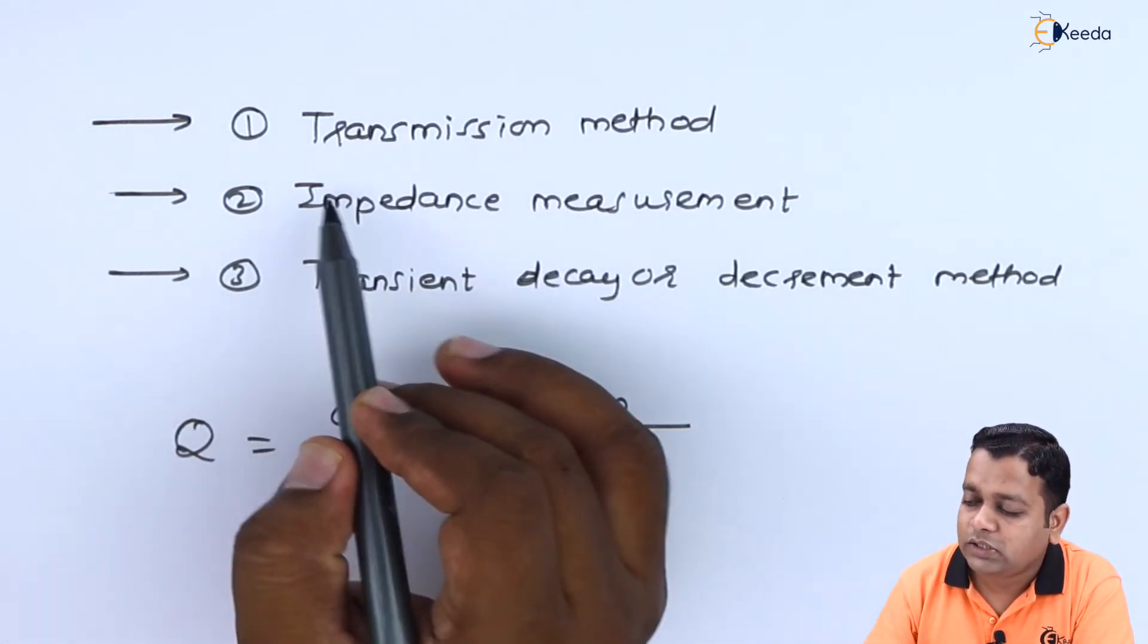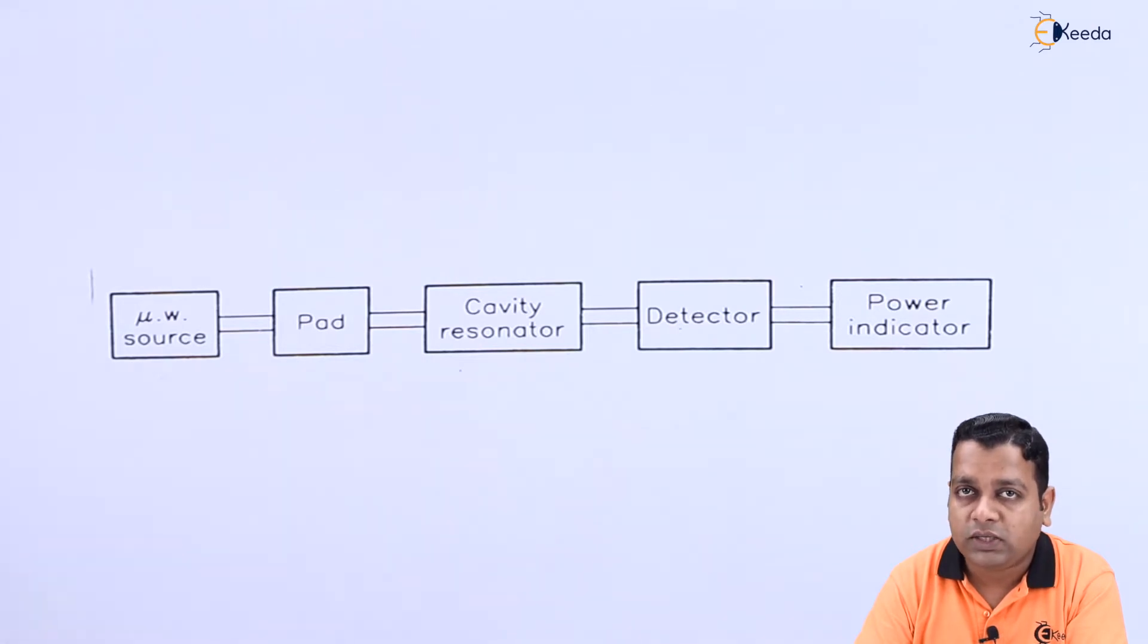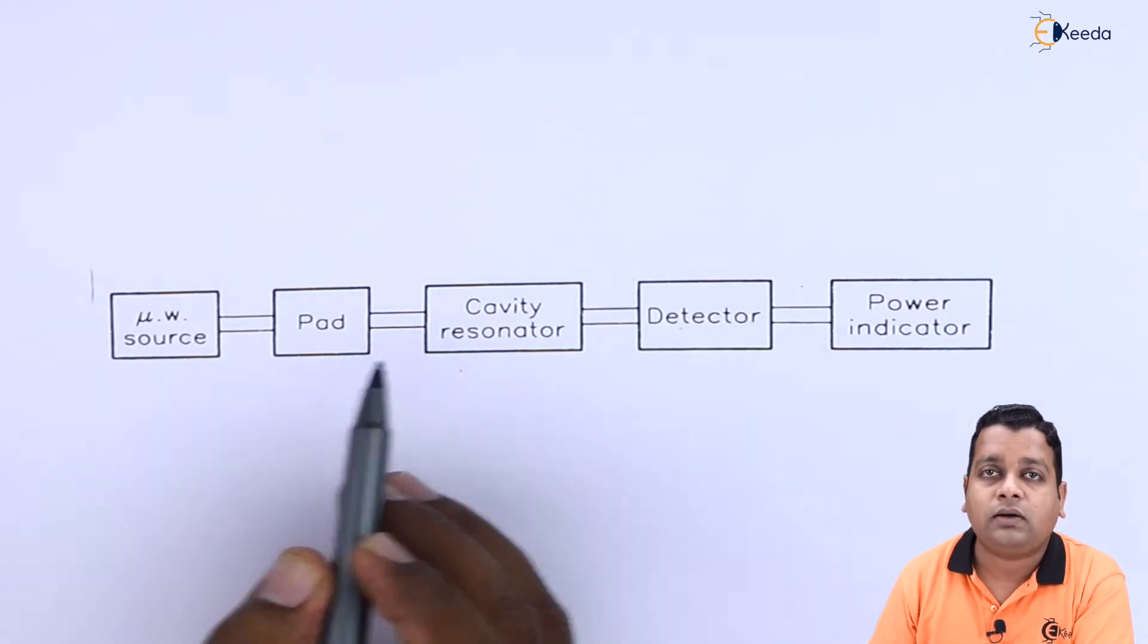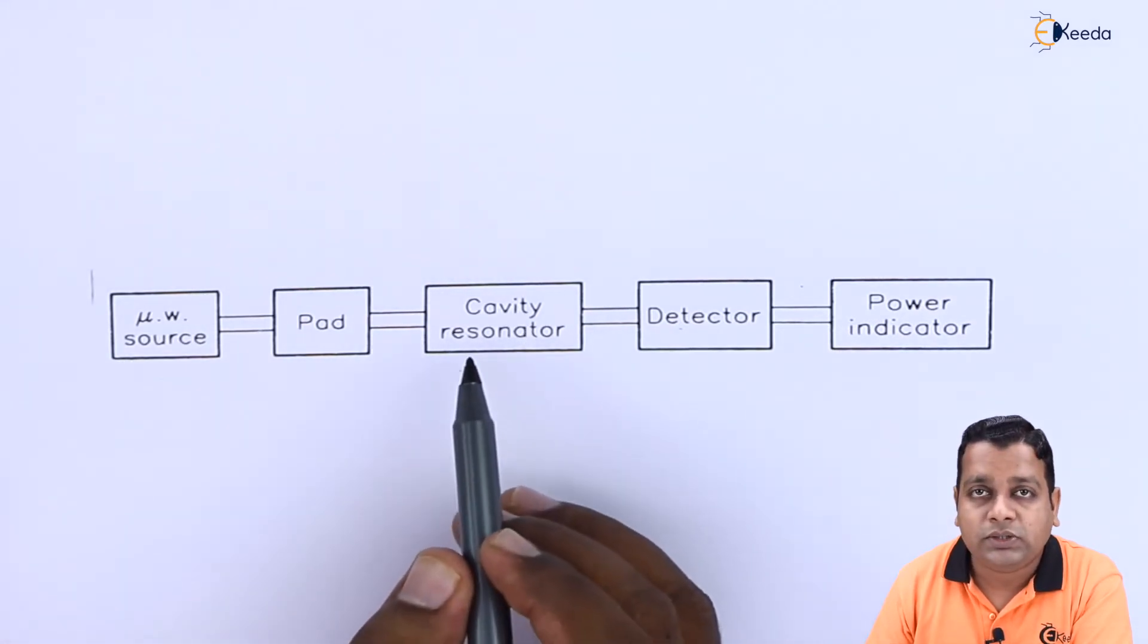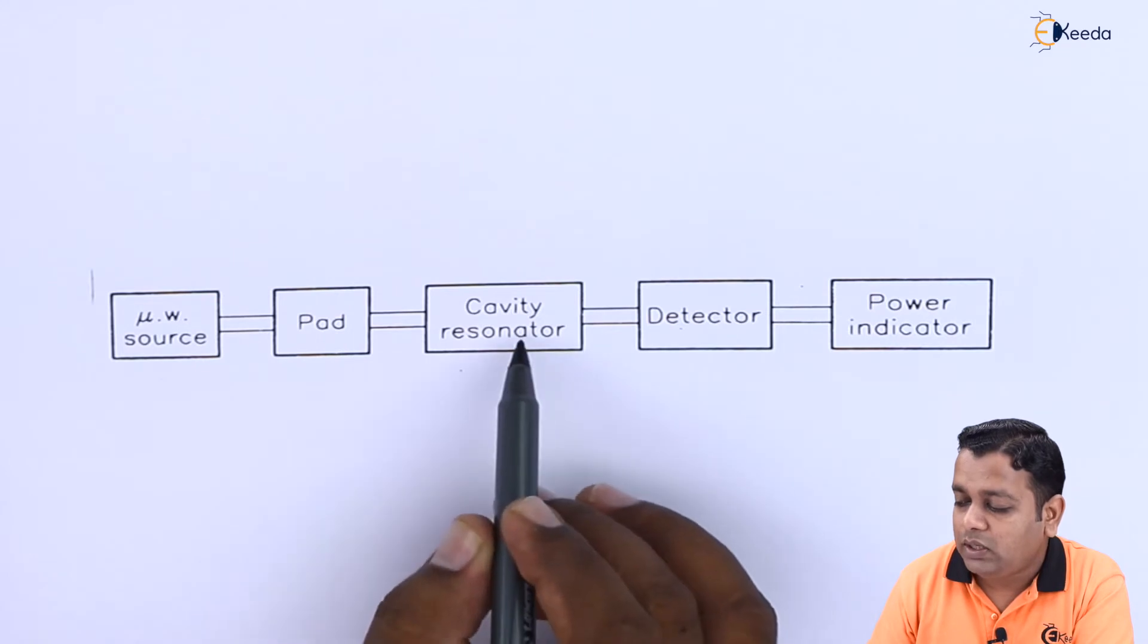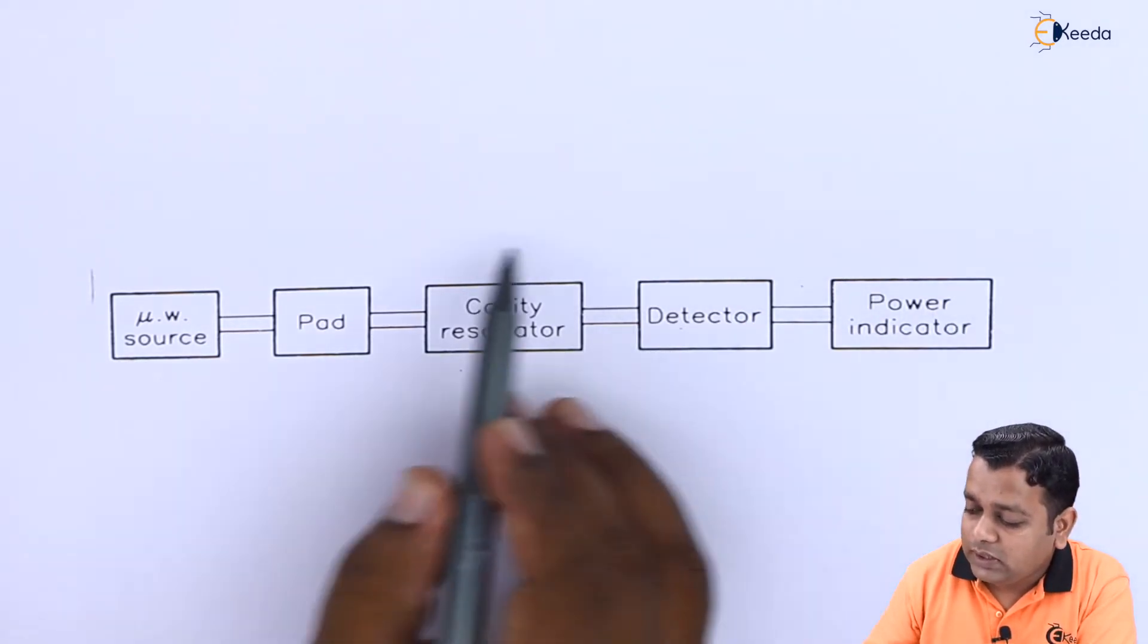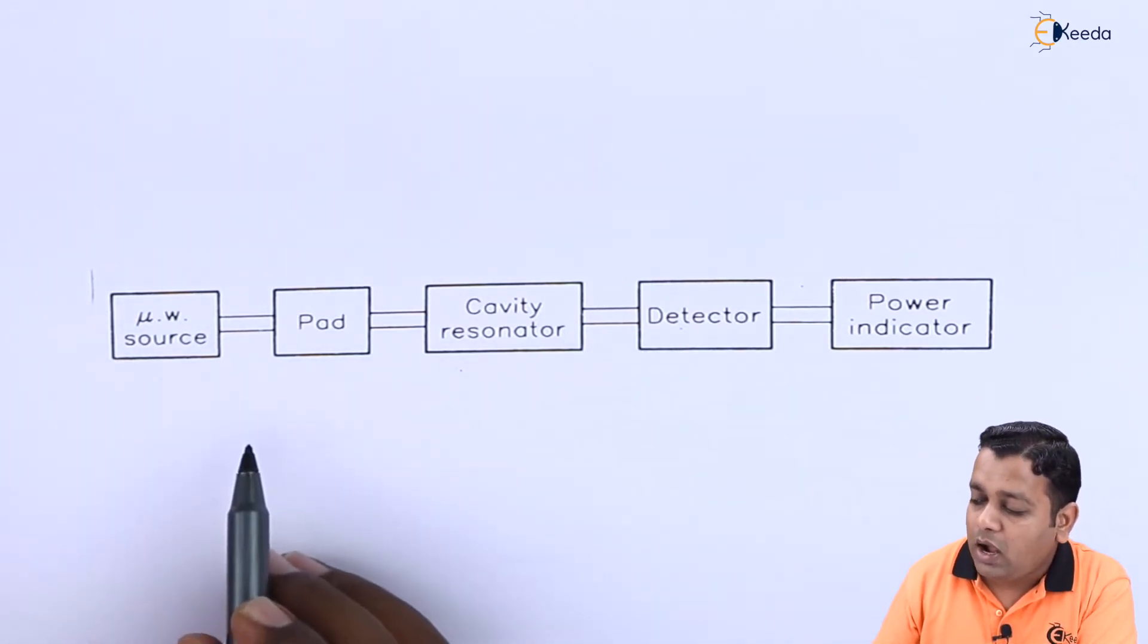Out of the three methods, the transmission method is one of the simplest one we shall be discussing. In the transmission method, usually in the microwave test bench we have the microwave source at the left hand side connected to the pad, and then the transmission line device which most possibly we prefer to have the slotted line, which is basically a rectangular waveguide. Instead of having the slotted or rectangular waveguide in general, we use the transmission device to be the cavity resonator for which the quality factor is to be measured. After the cavity resonator we have the connection to the detector and finally to the power indicator.